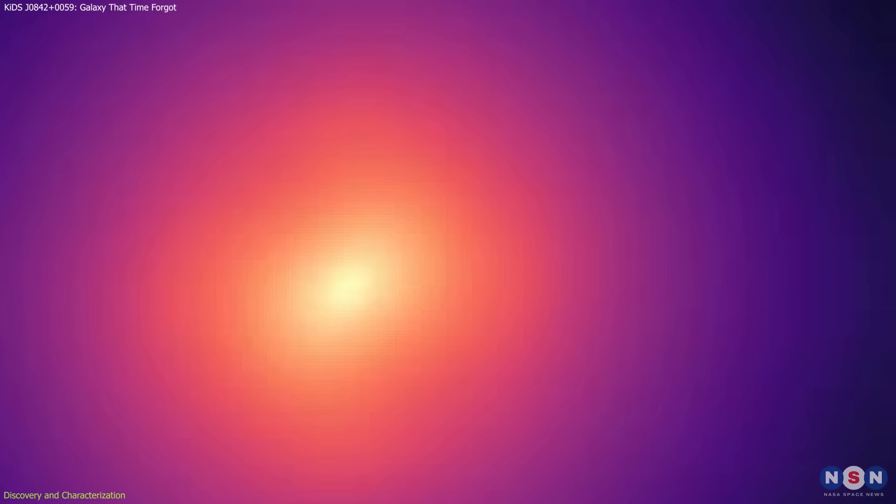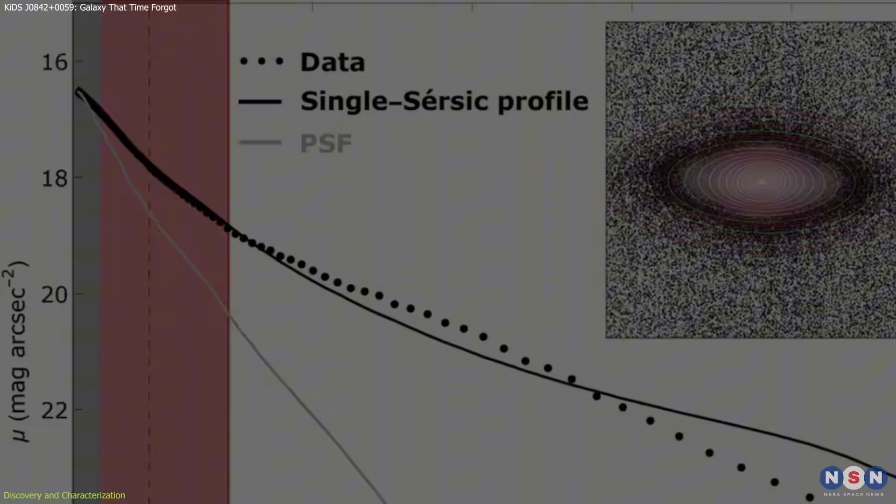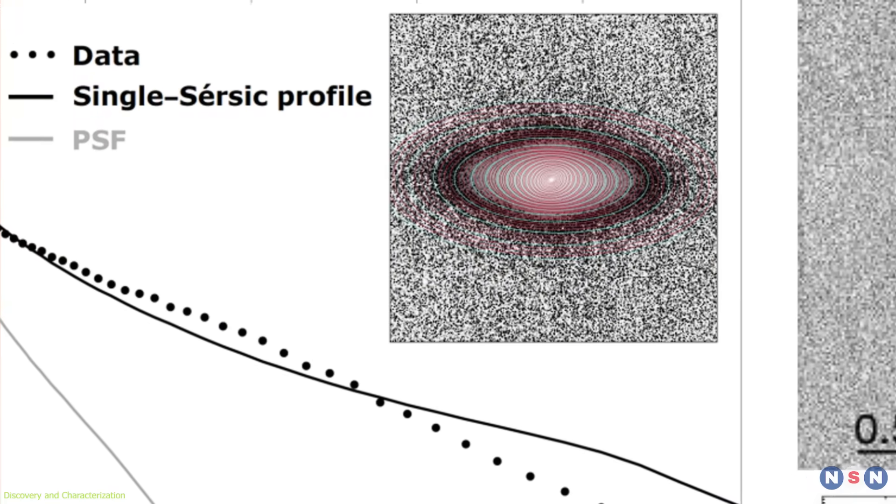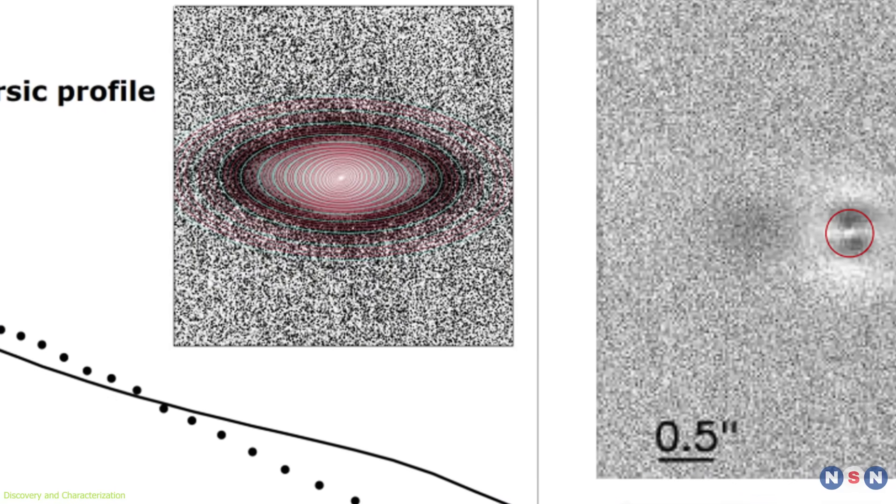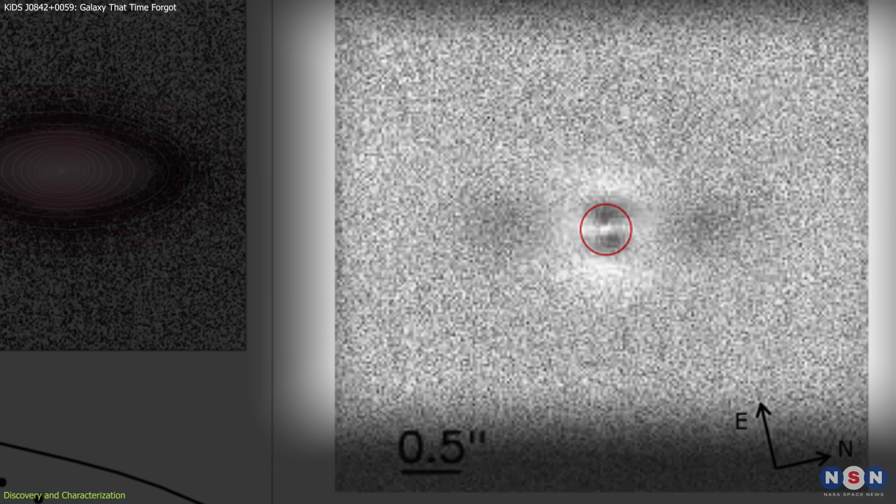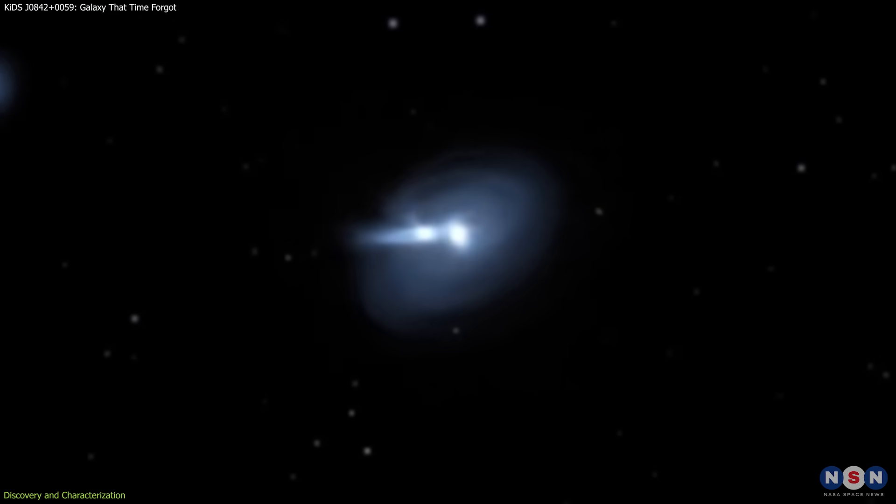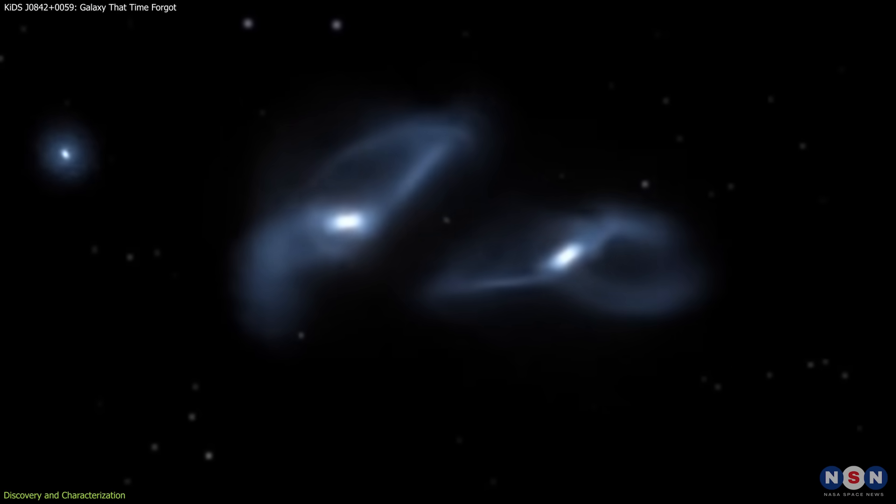At first glance, it appeared to be a compact elliptical galaxy, common enough. But closer examination revealed unusual features. Despite its large mass, estimated at around 100 billion times that of the sun, the galaxy was physically small and not forming new stars. Its stars were old, and there were no clear signs of past mergers or interactions.